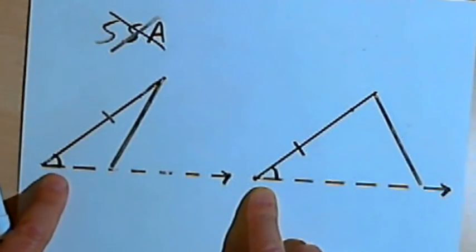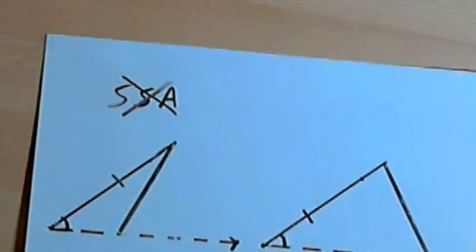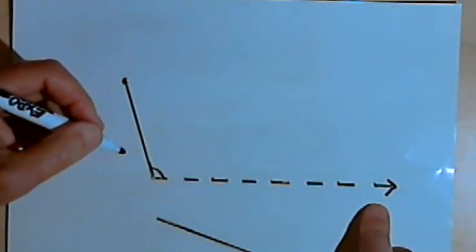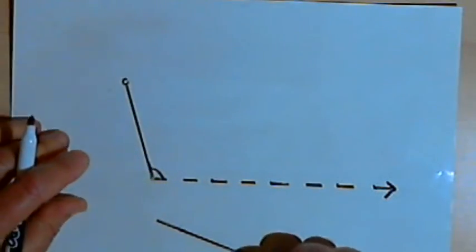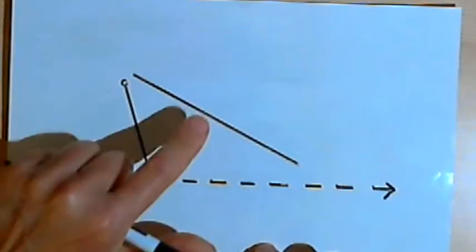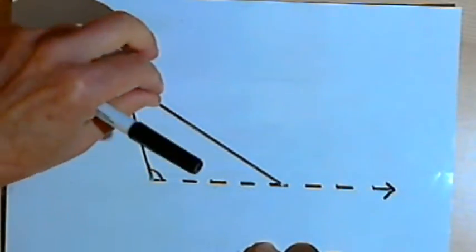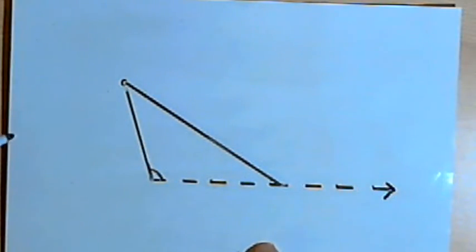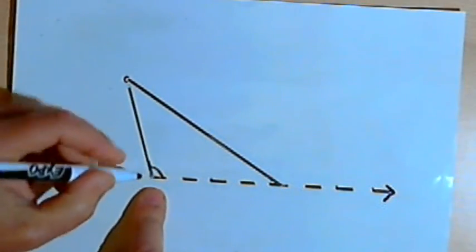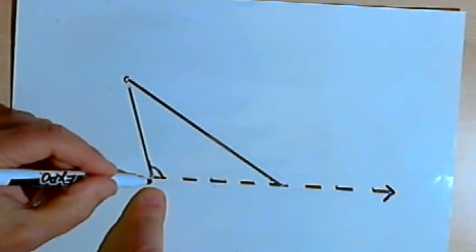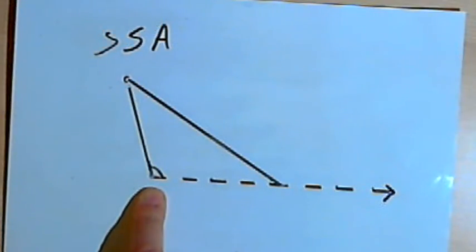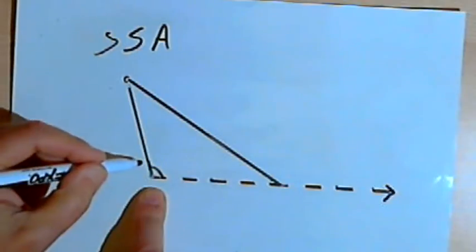Now notice that in this case I had an acute angle. Let's see what happens if I have an obtuse angle. So I've drawn an obtuse angle. One side of the angle is a ray, and one side is a line segment. And I'm going to take this stick and see how many different triangles I can form. And it looks like, no matter how I move this stick, there's really only one place, one way, that I can form a triangle. So that means that when my angle is an obtuse angle, when it's greater than 90 degrees, then side-side-angle will work. It will not work for an acute angle, it will work for an obtuse angle.